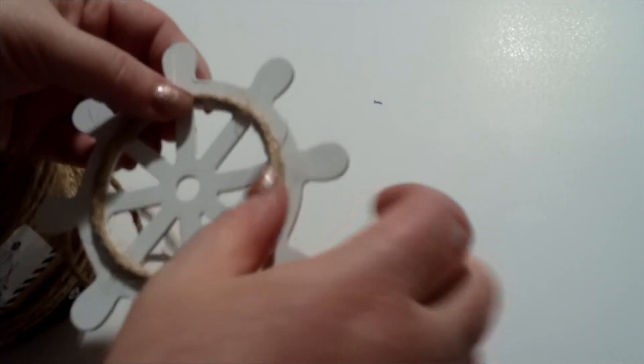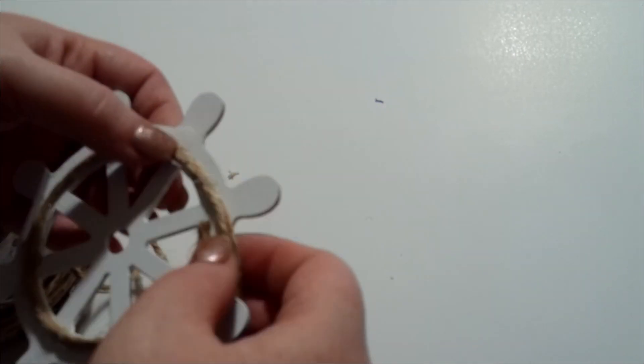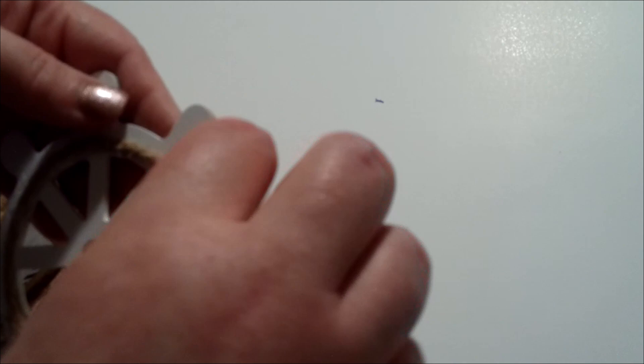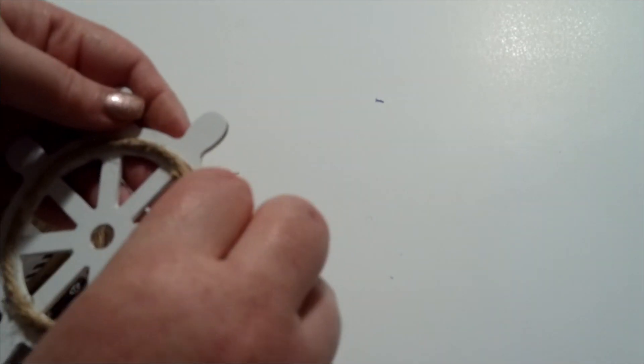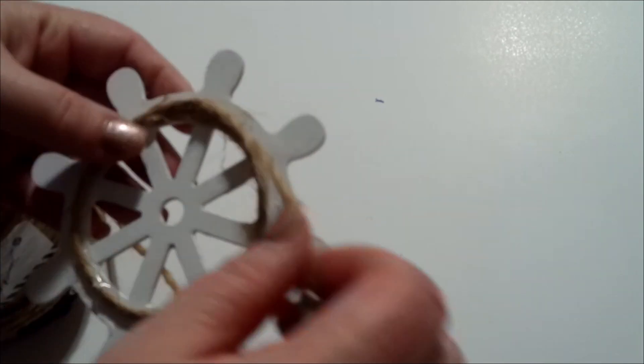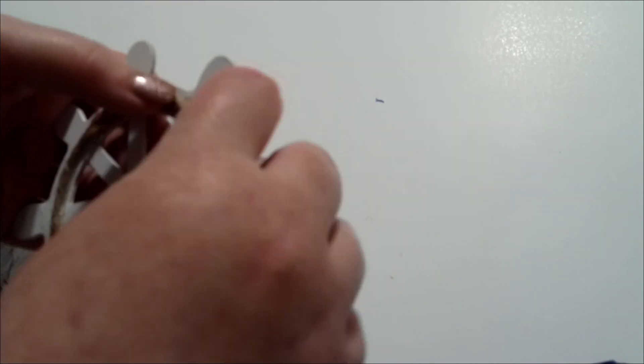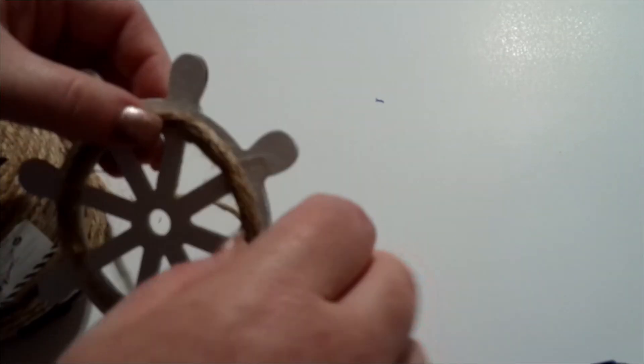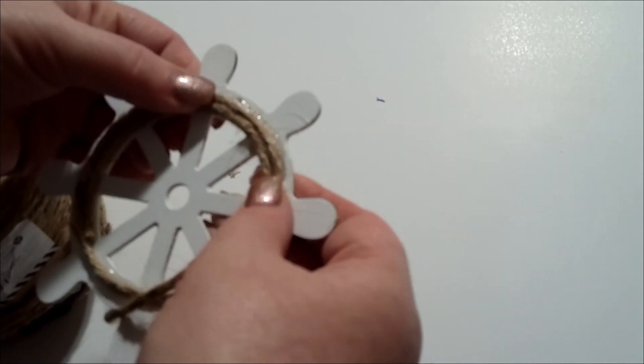I'm also going to go around what would be the wheel of it with my twine. I'm just going to hot glue it around the outside edge so that it covers that whole ring. And it turns out super cute.